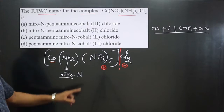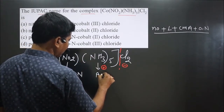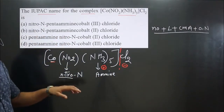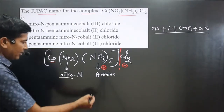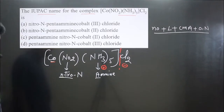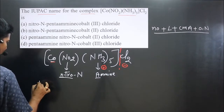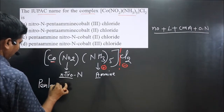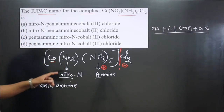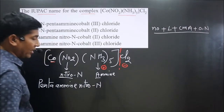Ammonia is named as 'amine', starting from A. Since more than one type of ligand is given, we follow alphabetical order — A comes before N. So first we name amine. How many amines are there? Five, so we mention penta-amine. Then we name the other ligand, which is nitro-N. Naming of ligands is done in alphabetical order: penta-amine first, then nitro-N.